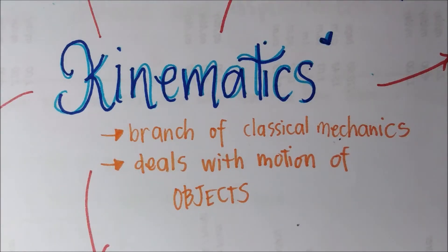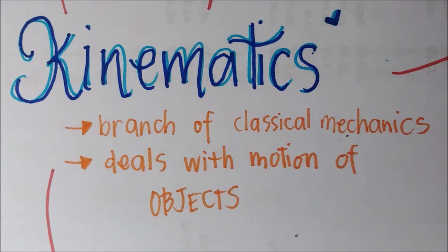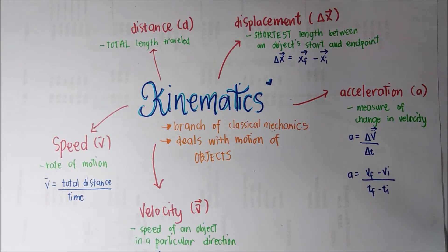Our topic for today is about kinematics. Kinematics is a branch of classical mechanics which deals with the motion of objects. In this video, we would be discussing terms used to describe the motion of objects, and these terms are distance, displacement, speed, velocity, and acceleration.